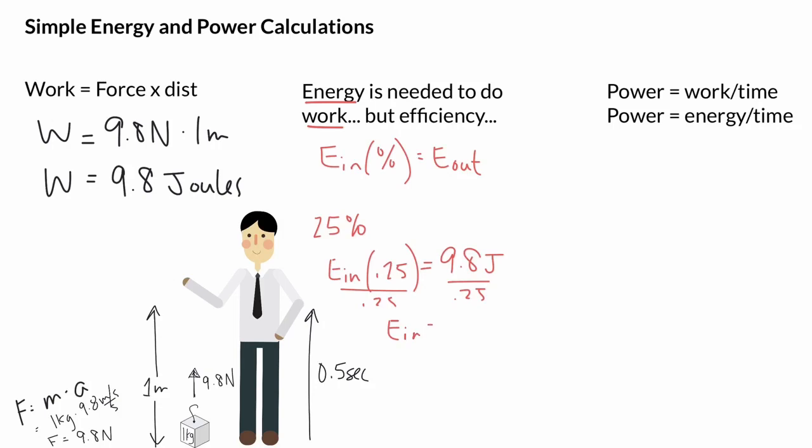So the energy that this person would have to intake in food terms would be 39.2. Now thinking units here, we divided by a percentage—there's no units on the percentage—so this is still joules. Another way to say this is that this person would have to intake or have 39.2 joules worth of food energy in order to do this 9.8 joules worth of work to the box.